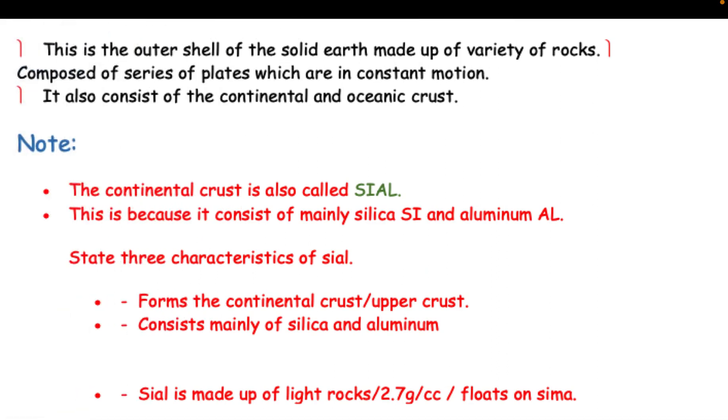the solid earth made up of a variety of rocks composed of a series of plates which are in constant motion. It also consists of the continental and oceanic crust. Note: the continental crust is also called SIAL. This is because it consists mainly of silica (Si) and aluminum (Al). State three characteristics of SIAL: